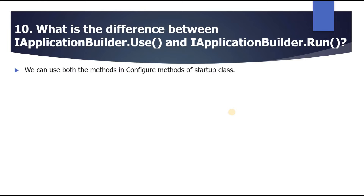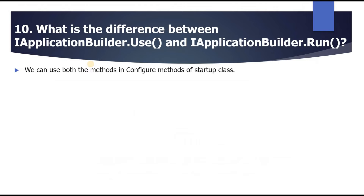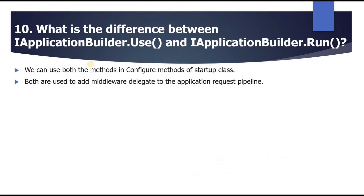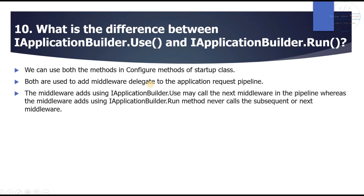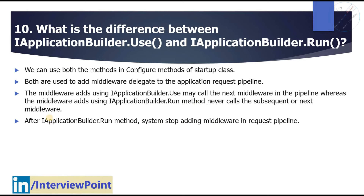The next question is: what is the difference between IApplicationBuilder.Use and IApplicationBuilder.Run? Both methods can be used in the Configure method of the startup class to add middleware delegates to the application request pipeline. Middleware added using Use may call the next middleware in the pipeline, whereas middleware added using Run never calls the subsequent or next middleware. After IApplicationBuilder.Run, the system stops adding middleware to the request pipeline.